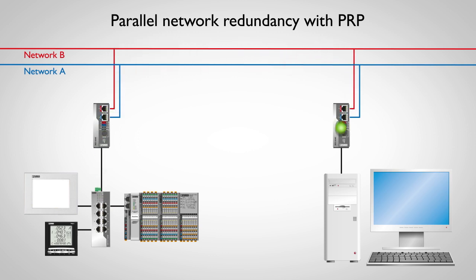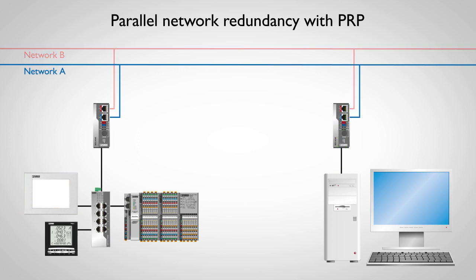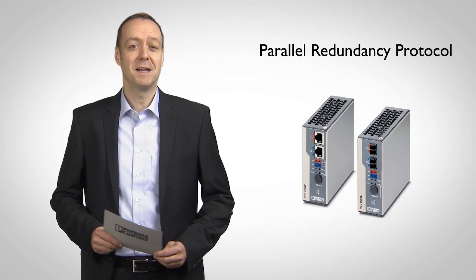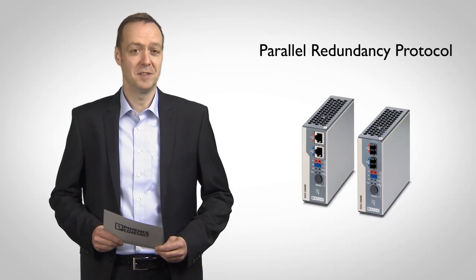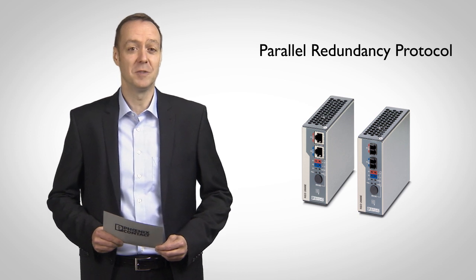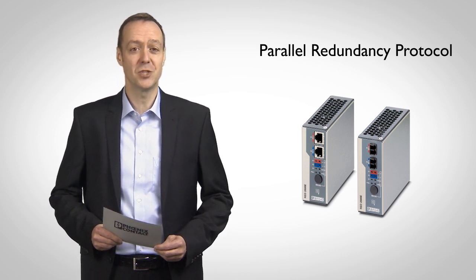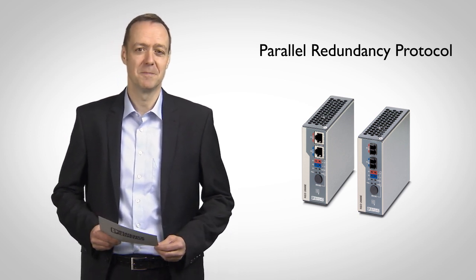No configuration is required for device startup. Parts of a network or even an entire network can be switched off for maintenance work without impacting ongoing operation. PRP redundancy modules from Phoenix Contact enable parallel redundancy without switchover time in the event of a fault.